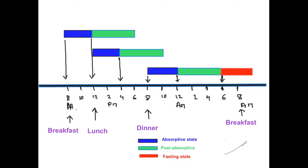From 6 a.m. onwards you begin entering fasting state, shown in red. From 8 p.m. the previous night through 6 a.m. you passed through absorptive and post-absorptive states; from 6 a.m. onward it is fasting condition. When you take breakfast at 7, 8, or 9 a.m., you are already in fasting condition, and you are breaking that fast — which is why it is called 'break fast.'